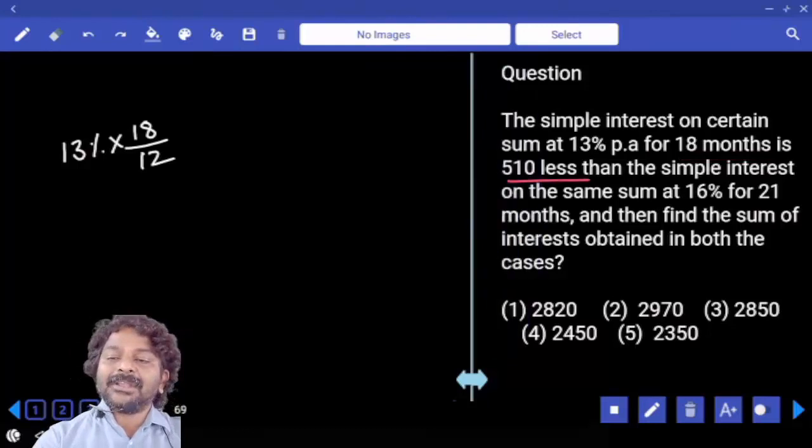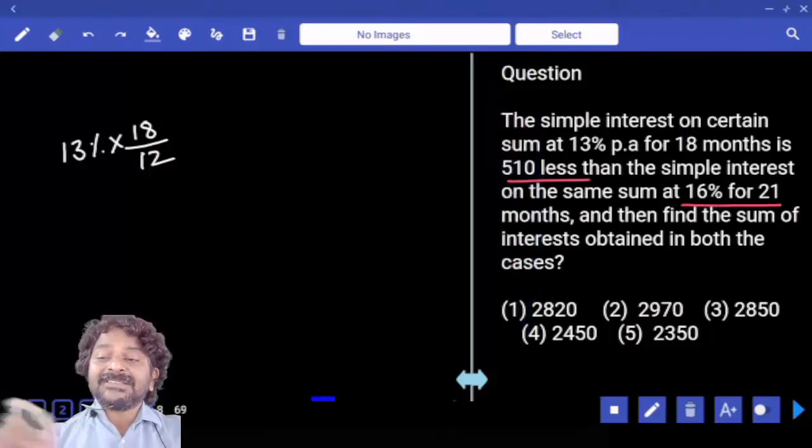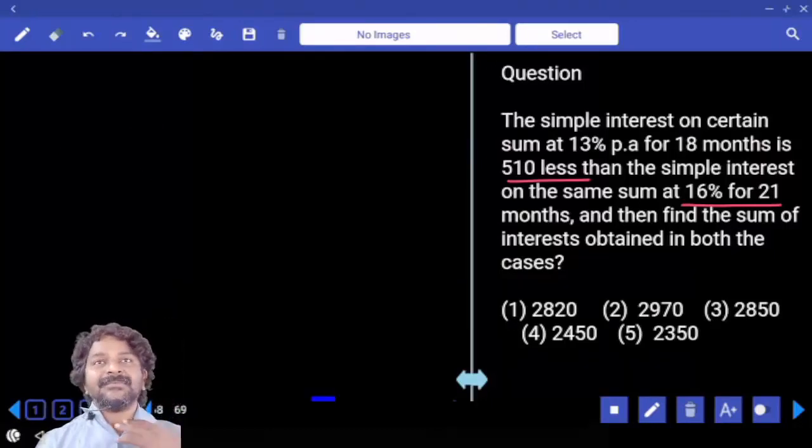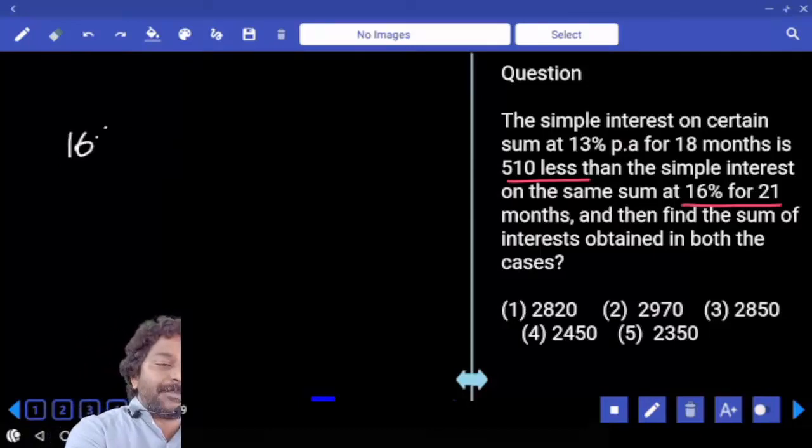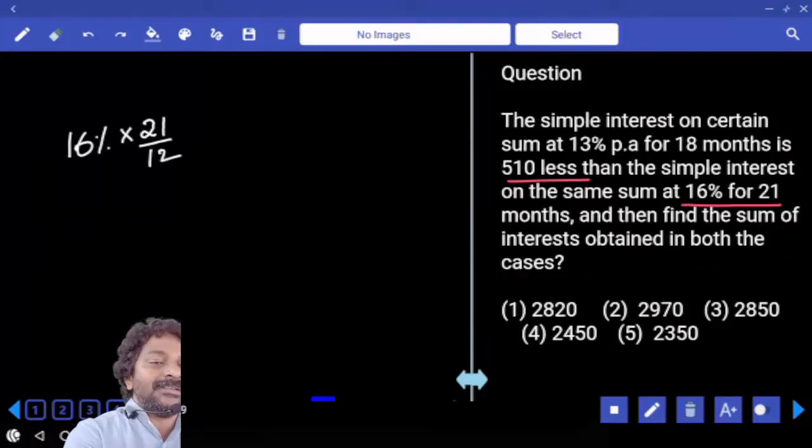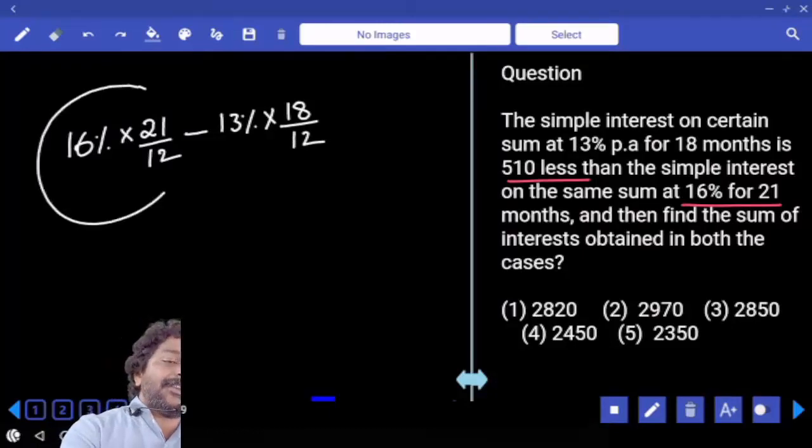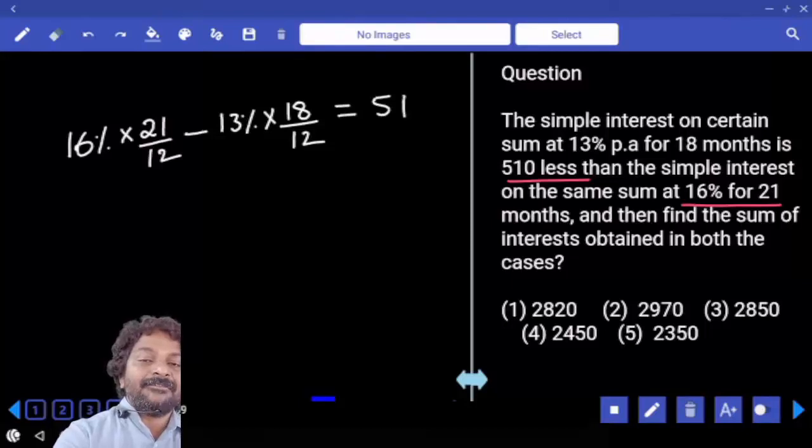And here whatever the interest obtained is 510 less than simple interest obtained from the other scheme wherein we have 16% per annum for 21 months. So in which case we are getting more interest? Second case. So at the rate of 16%, 21 months converted to years, minus 13% of 18 months, again this value converted to years. Yes, interest obtained from the second scheme, interest obtained from the first scheme, and the difference mentioned as 510.